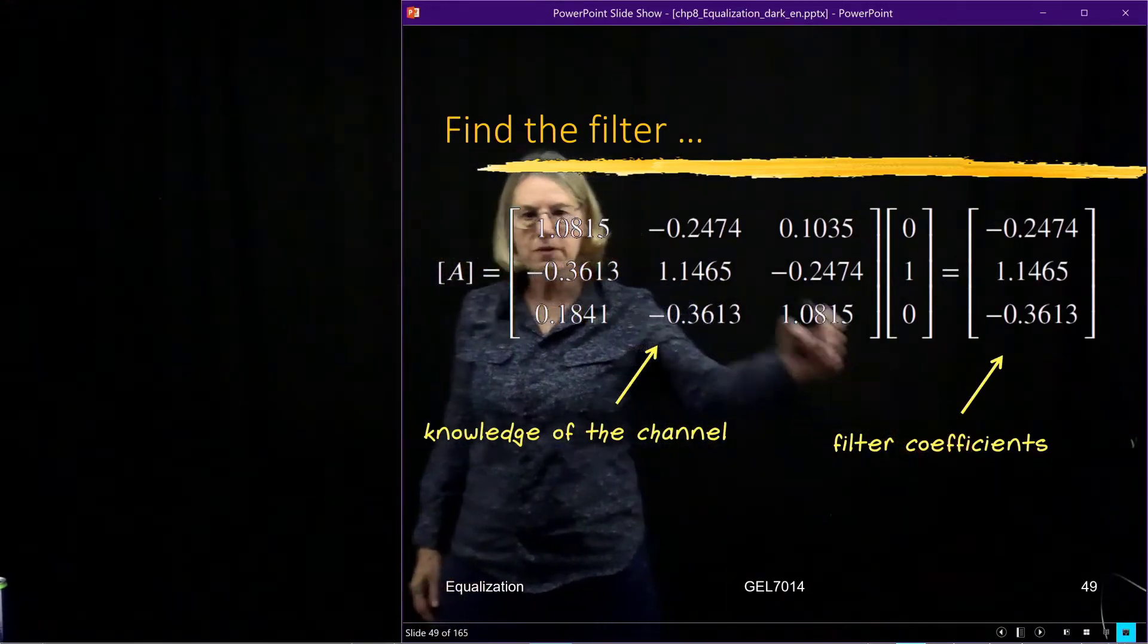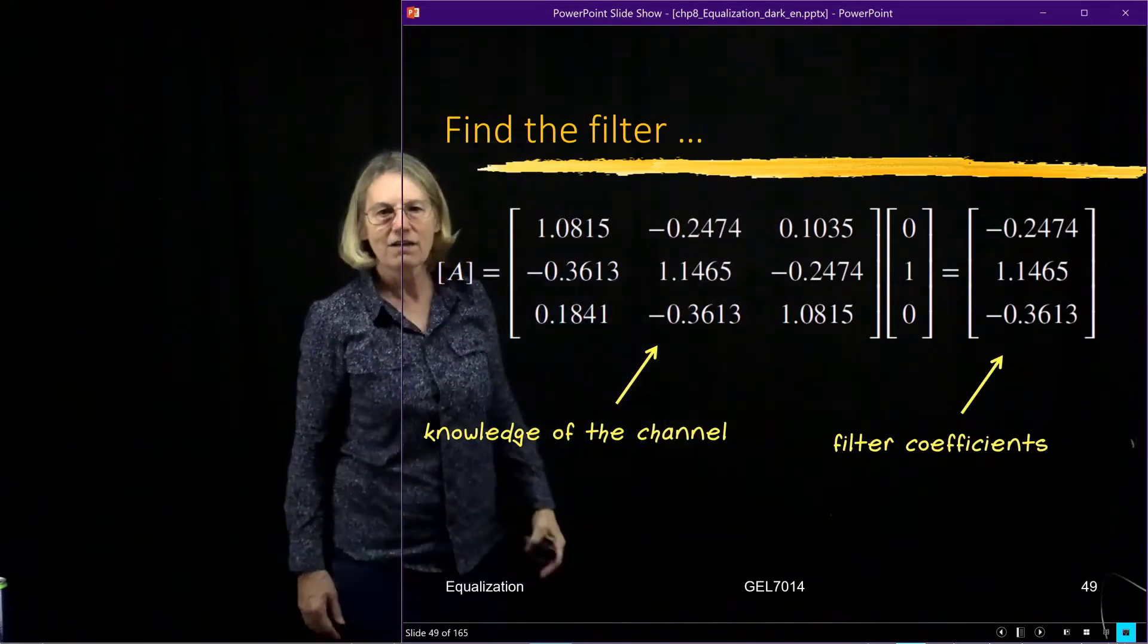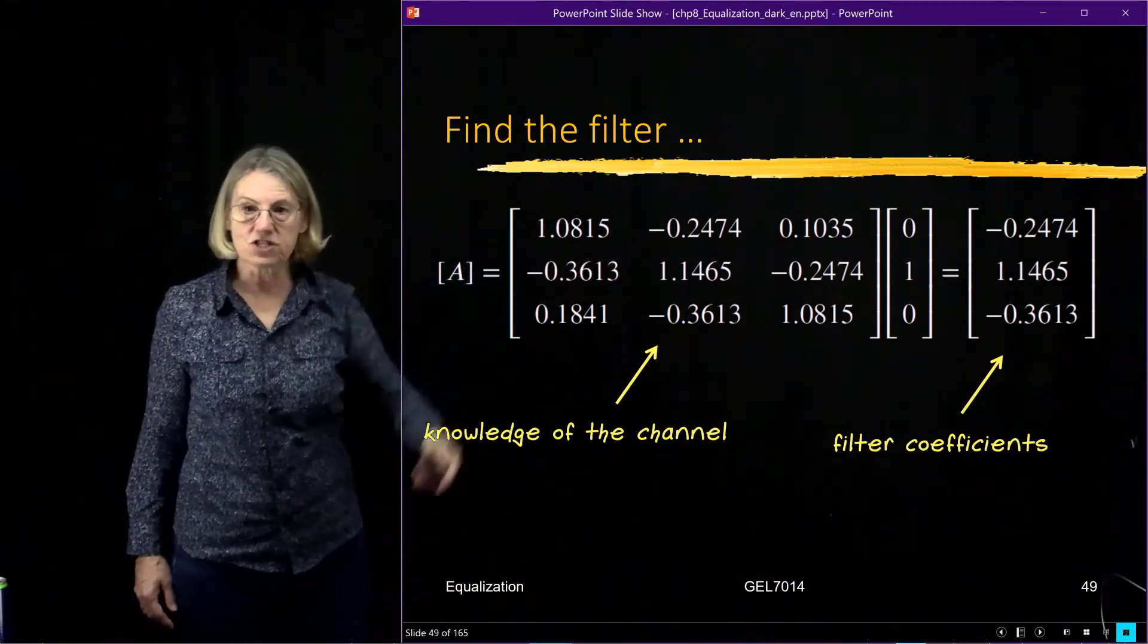The knowledge of the channel gave me the ability to invert this. When I multiply by it I'm going to get the filter coefficients, but again remember that's just pulling out what is the center column of this matrix. So now I know what filter coefficients to use to equalize this channel.